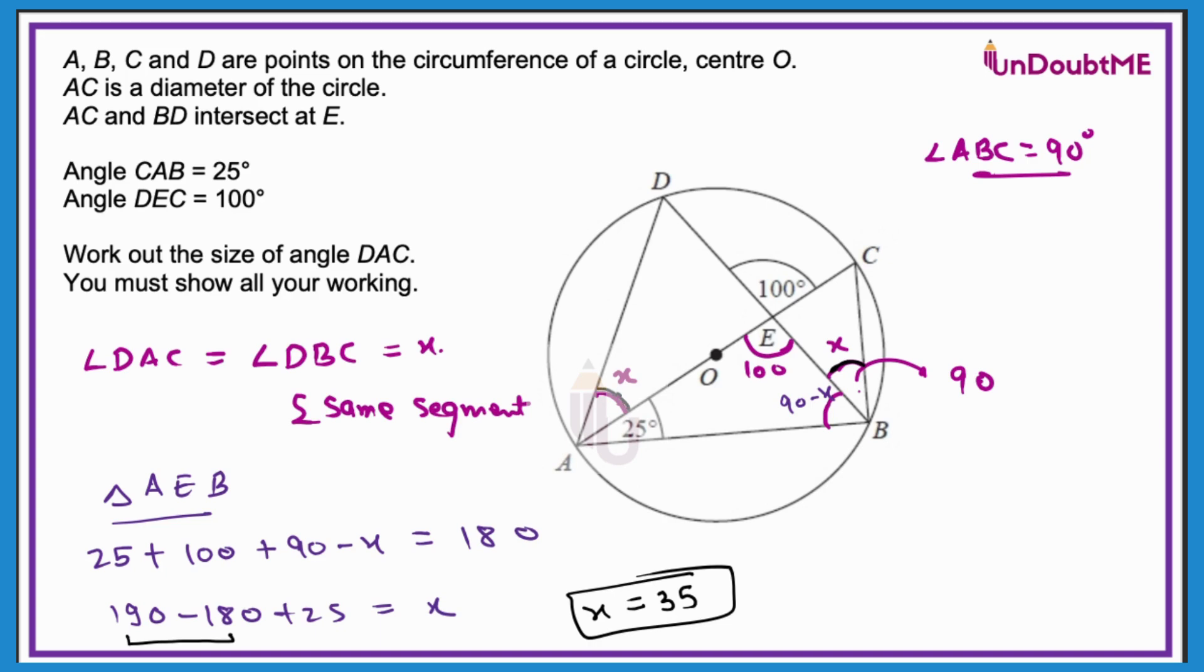And that x and this x they are same. We are finally done with the value of angle DAC which is 35 degrees.